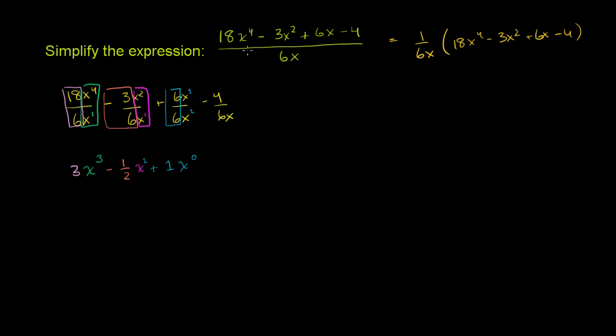And we kind of have to assume x doesn't equal 0 in this whole thing, otherwise we would be dividing by 0. And then finally, we have 4 over 6x. There's a couple of ways to think about it.